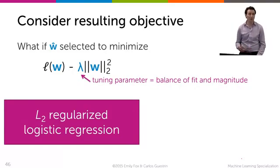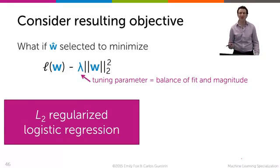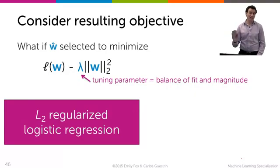Now you might ask at this point, how do I pick lambda? Well, if you took the regression course, you should know the answer already. Don't use your training data, because as lambda goes to 0, you're going to fit the training data better. You're not going to be able to pick lambda that way. Never ever use your test data, ever.